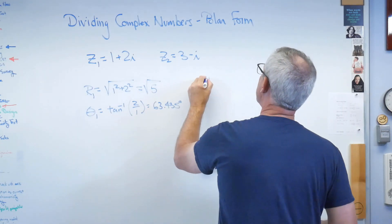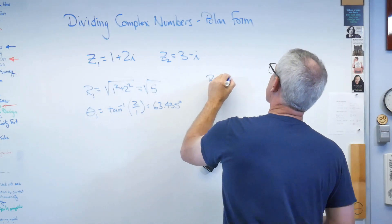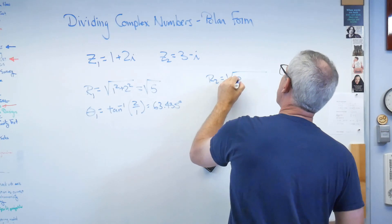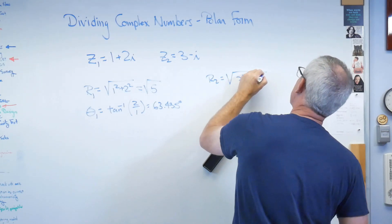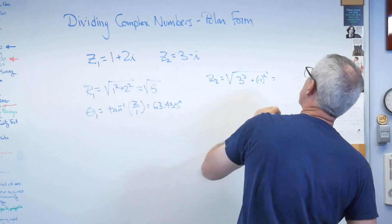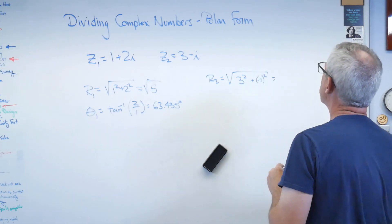Well, let's do r2 and theta2 while we're at it. That looks like that's going to be 3 squared plus minus 1 squared. And that sure looks to me like that's going to be 10, right?